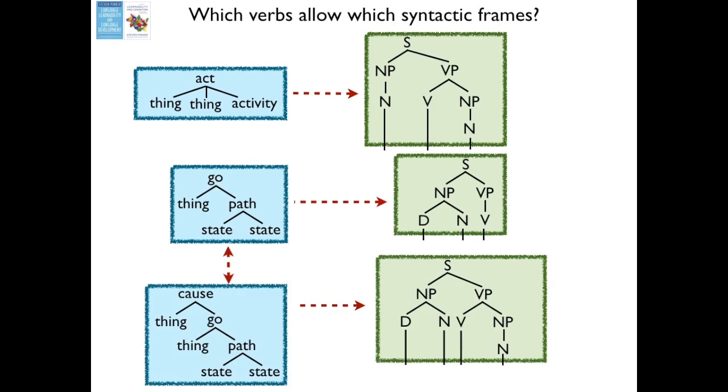So any given verb can be used syntactically in a number of different ways. You could say 'the cat broke the vase,' where you have a subject and a direct object, or just 'the vase broke,' where you have only a subject and no direct object. On this theory, this amounts to saying that any given verb is compatible with multiple semantic frames. What Pinker argues is that there are rules that tell you, given that you're compatible with one particular frame, what other frames you might be compatible with. For instance, it's typically the case in English that if a verb can describe one thing causing another thing to go along a path from one state to another — so 'the vase broke,' it went from not being broken to being broken — then that verb can also be used to describe one thing causing another thing to undergo that change of state: 'the cat broke the vase,' the cat caused the vase to now be broken.